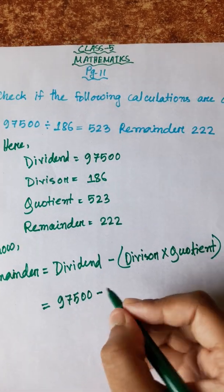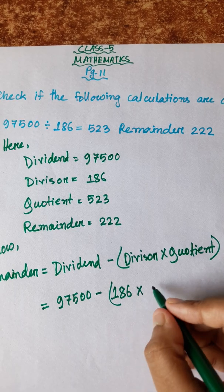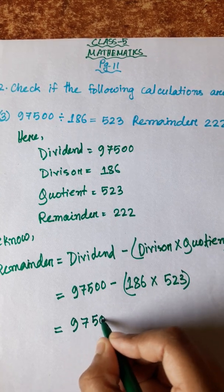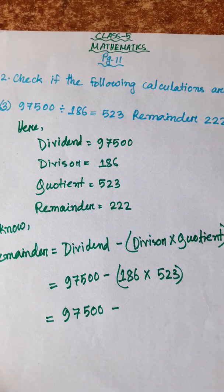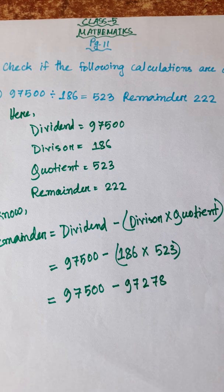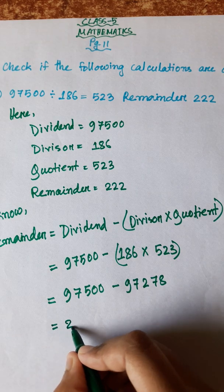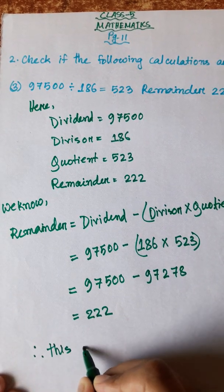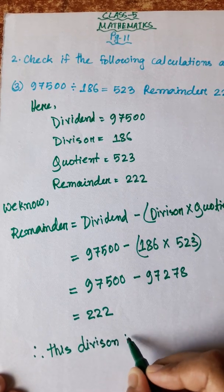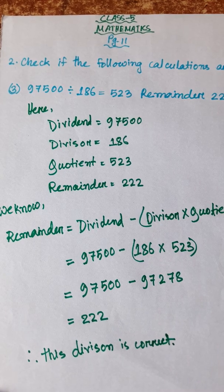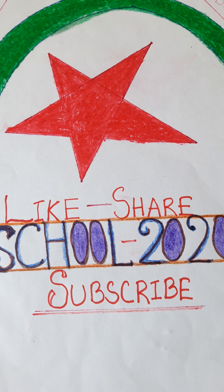So: 97500 minus (186 × 523). First calculating 186 × 523 = 97278. Then 97500 minus 97278 = 222. And our remainder is 222 — that means this division is also correct. If you like our videos, please share with your friends and don't forget to subscribe to our channel.